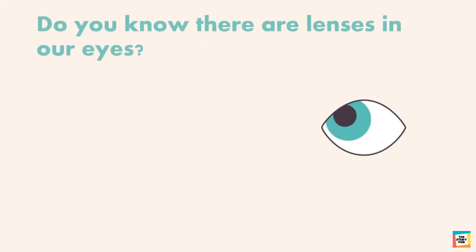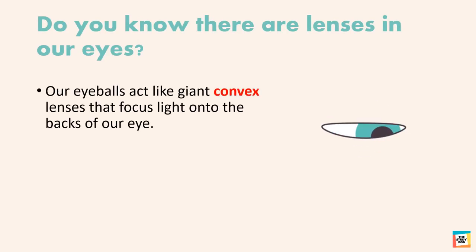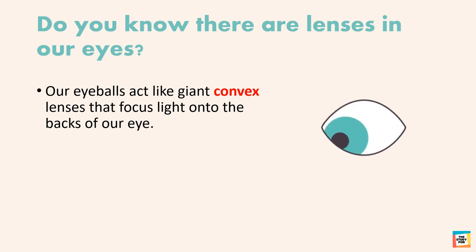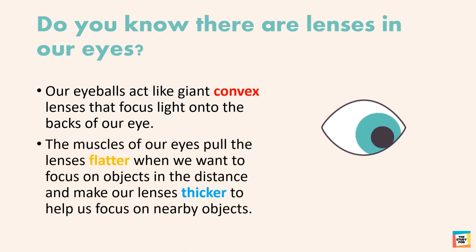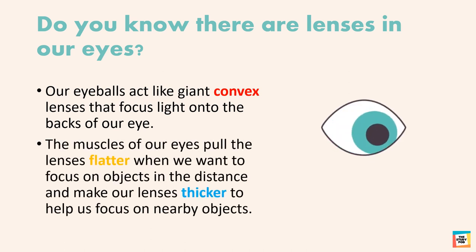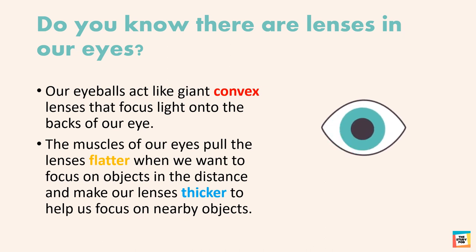Did you know there are lenses in our eyes? Our eyeballs act like giant convex lenses that focus light onto the backs of our eyes. The muscles of our eyes pull the lenses flatter when we want to focus on objects in the distance, and make our lenses thicker to help us focus on nearby objects.